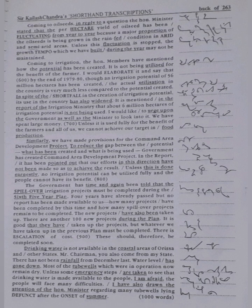It is mentioned in the report of the Irrigation Ministry that about 6 million hectares of irrigation potential is not being used. I would like to urge upon the government as well as the minister to look into it. We have spent large money. Unless it is used fully for the benefit of the farmers and all of us, we cannot achieve our target in food production.